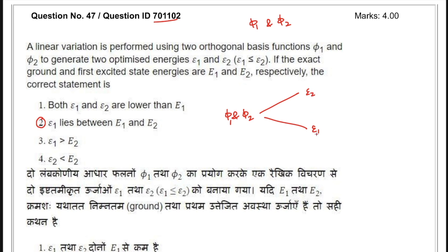The exact ground state energy is e1 and the first excited state energy is e2. What they are asking is the relationship between these. The thing we have to presume is that ε1 corresponds to the optimized energy near e1 and ε2 is the energy near e2. Under that assumption, the answer is justified and option 2 is correct.